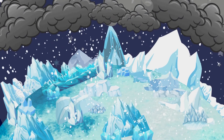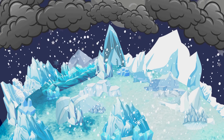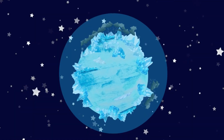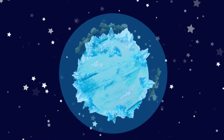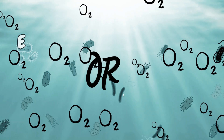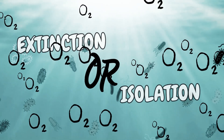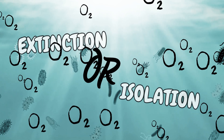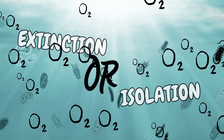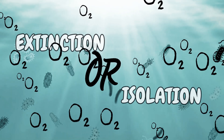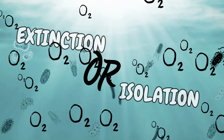Where the planet was nearly entirely covered in ice — it was a total planetary reset, all thanks to the simple waste product of a tiny microbe. The anaerobic life that had dominated the planet was either driven to extinction or forced to retreat into oxygen-free pockets of the world, where they still exist today.